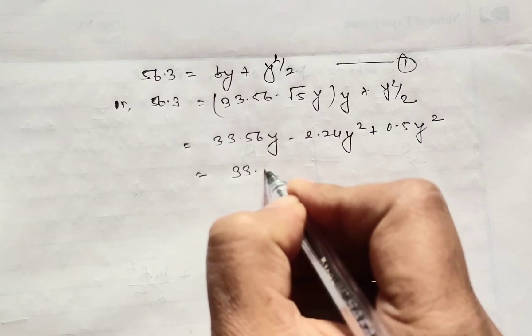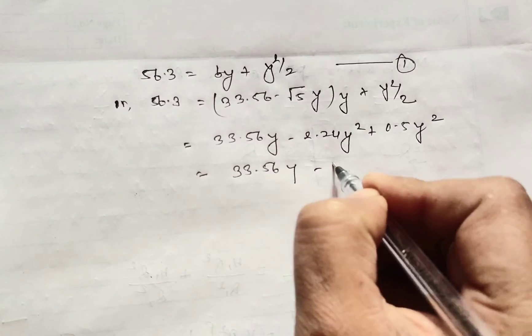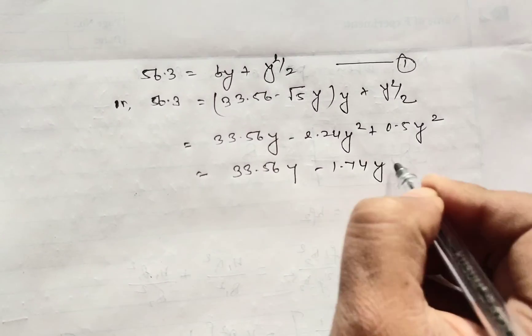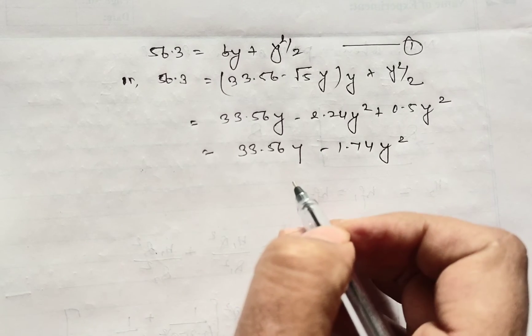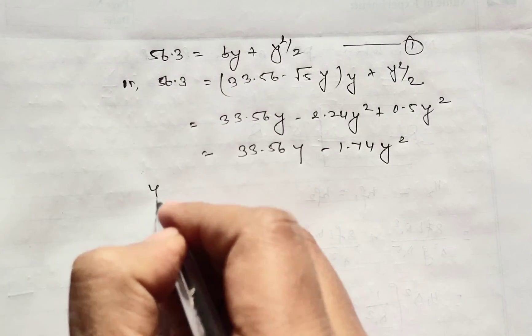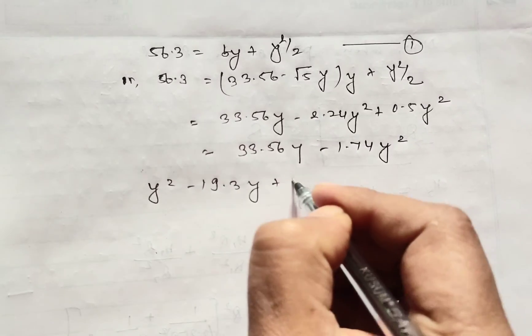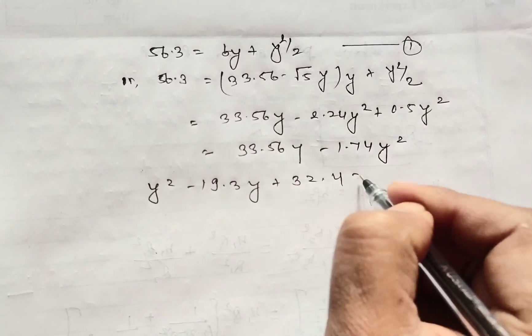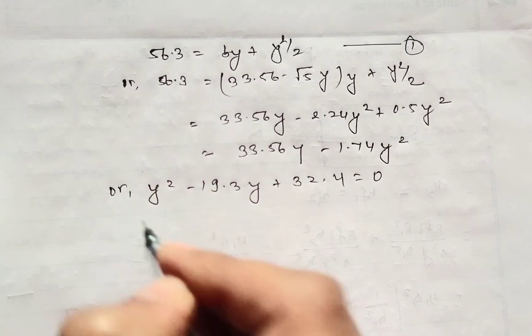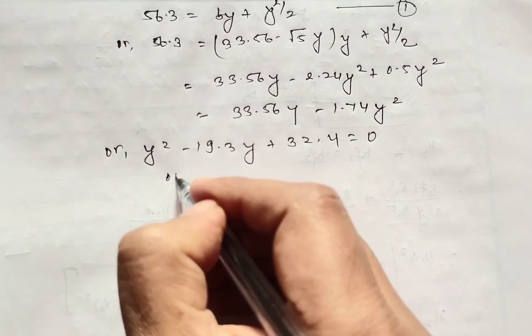On simplifying this, the equation form will be Y square minus 19.3Y plus 32.4 equals 0. So on calculating this,